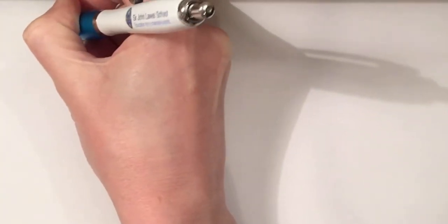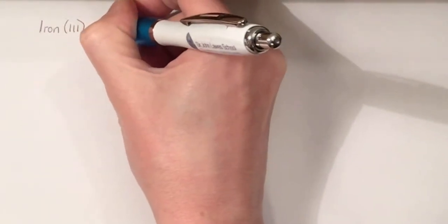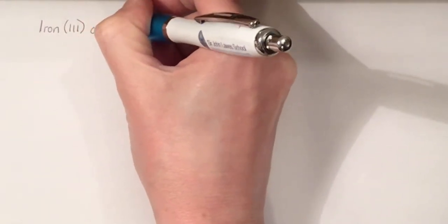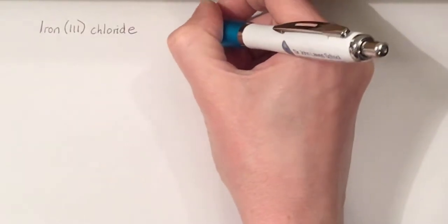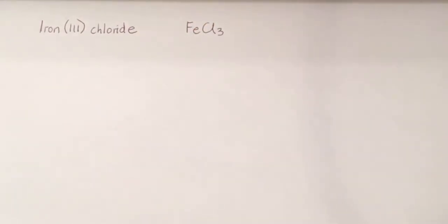We're going to look at the electrolysis of iron chloride. The three in the brackets there, the Roman numeral, tells us it's iron three plus ions. So iron chloride, iron three chloride, is this FeCl3.